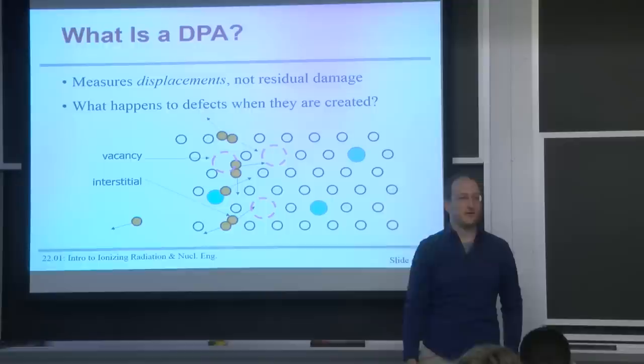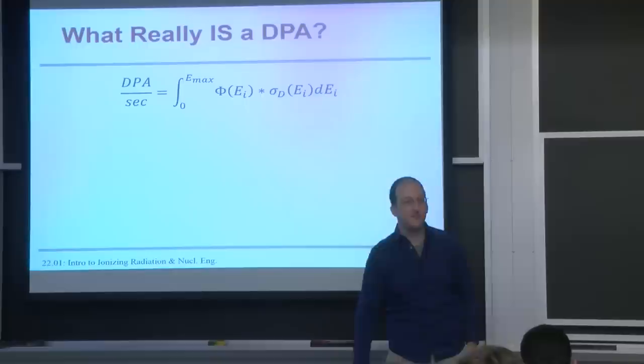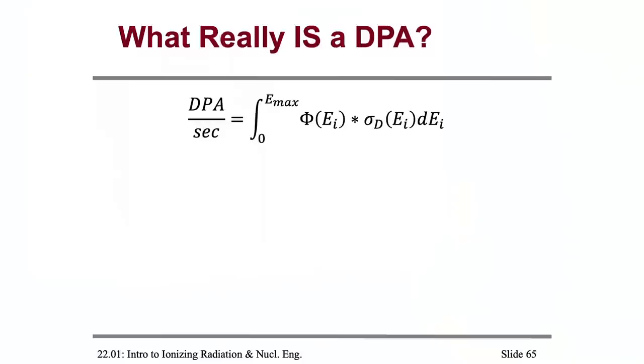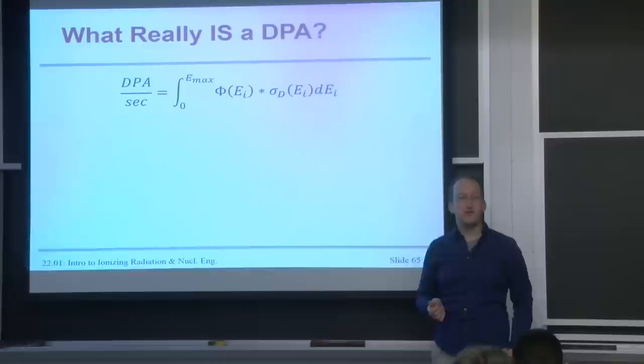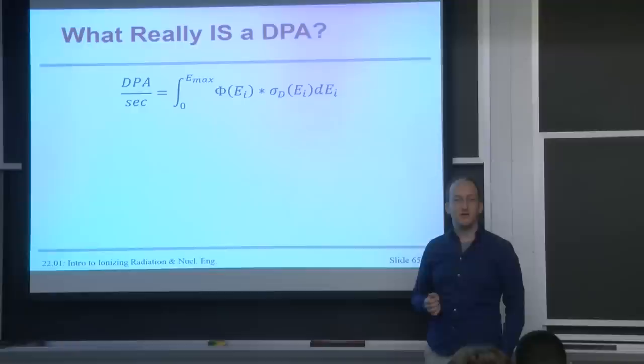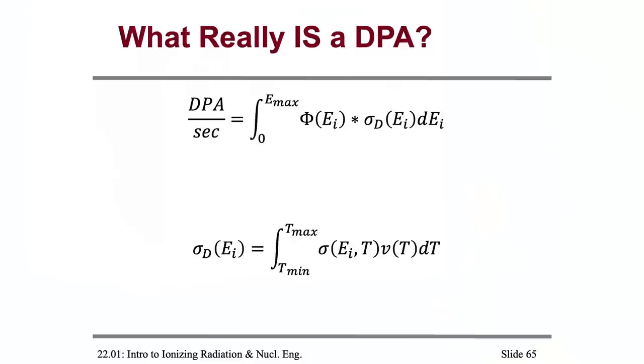What DPA actually measures is how many times do the atoms get knocked around. But it says nothing about where they end up. And that's the really interesting part about specifically radiation material science. Because let's say one of these interstitials were then to combine with one of these vacancies, it's like they were never there. Even though they were displaced and would be counted as part of the DPA or the radiation damage dose, the net effect on the crystal material is nothing. So let's see what really the DPA is. It's a simple formula that I think you guys may recognize. Does this look familiar from all of neutronics that we've been doing? It's yet another reaction rate.